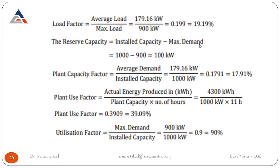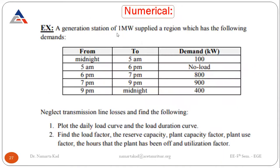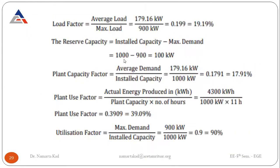Reserve capacity = installed capacity minus maximum demand. Installed capacity is 1000 kW (1 MW), maximum demand is 900 kW, so reserve capacity = 100 kW. Plant capacity factor = average demand / installed capacity = 179.16 / 1000 = 0.1791.